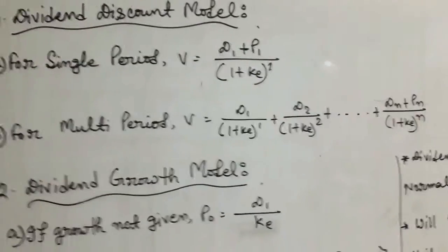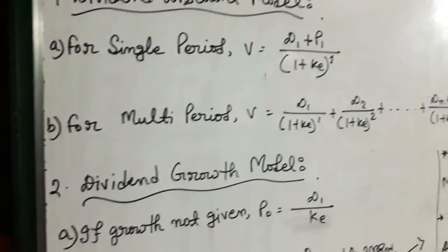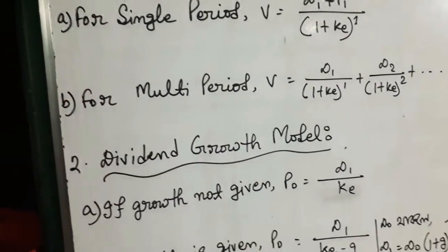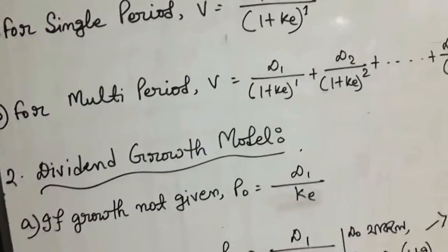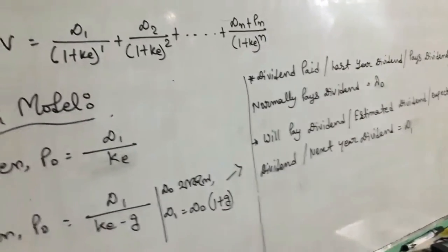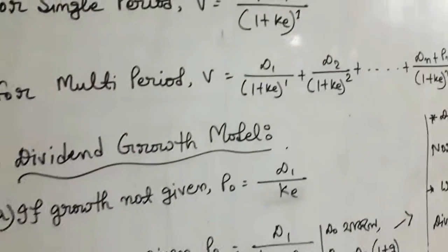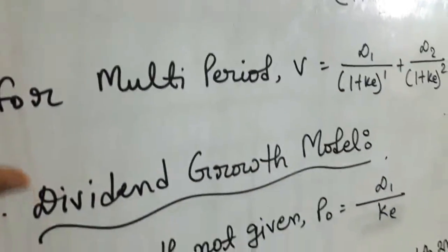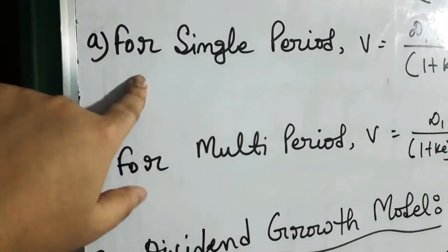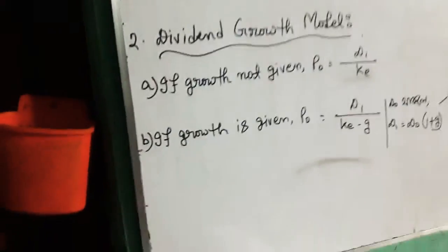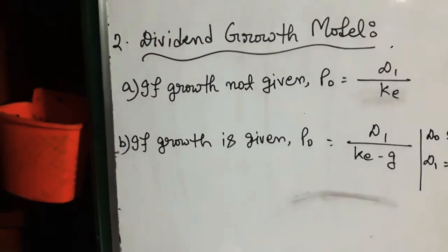If you look at the share period — suppose you are in 2010, 2011, 2012 — if you look at the share period, the share period is 2020. So if you look at it, it will be multi-period. If you look at the dividend discount model, it will be very low. So the number is the dividend growth model.